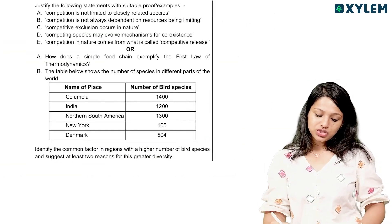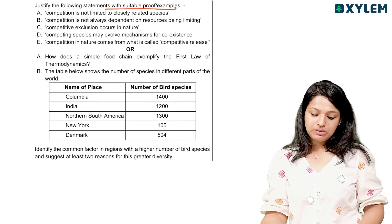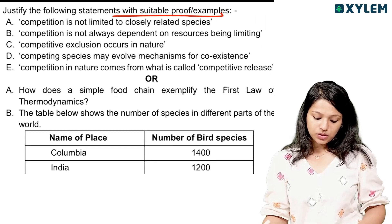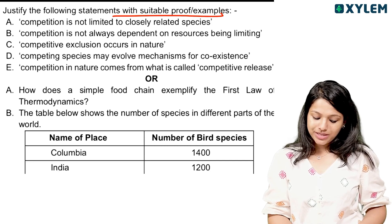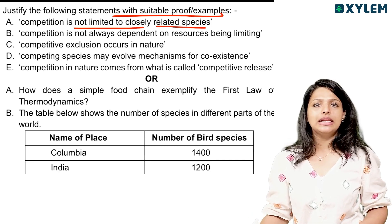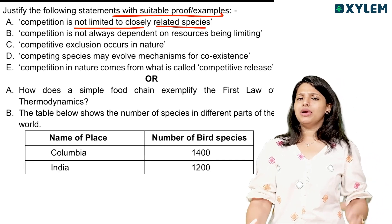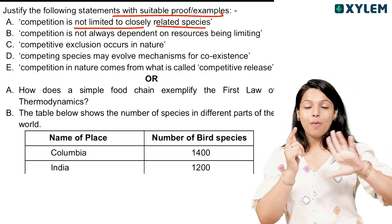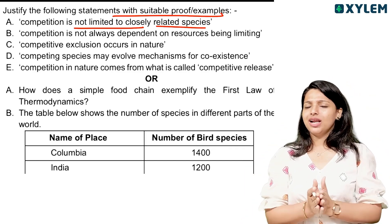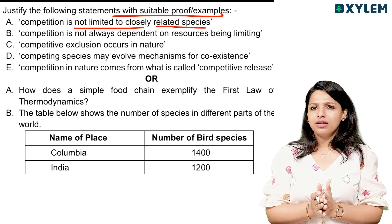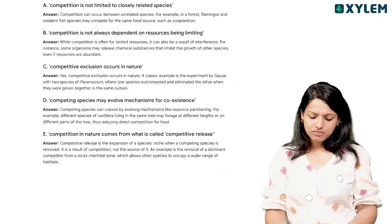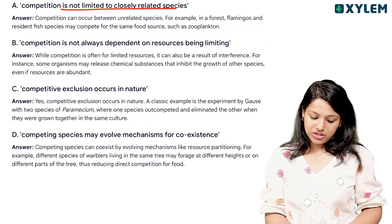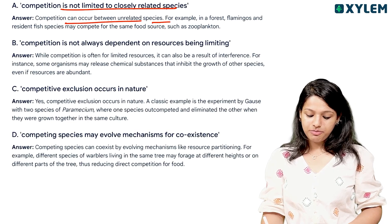The next question asks: justify the following statement with suitable proof or example — competition is not limited to closely related species. We call it interspecific competition. Competition is not limited to closely related species; it can occur between unrelated species as well.